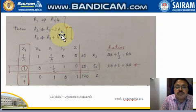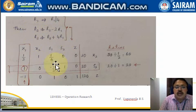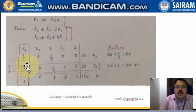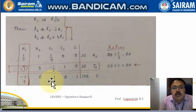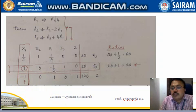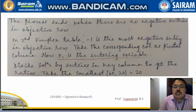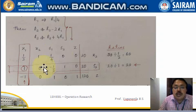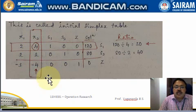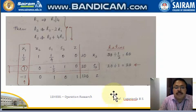The other entries in the pivotal column must be made 0. Row operations are performed: the new row 2 and the new objective function row are computed using the appropriate operations, making those pivotal column entries become 0. The other entries are updated accordingly, giving us the new simplex table.